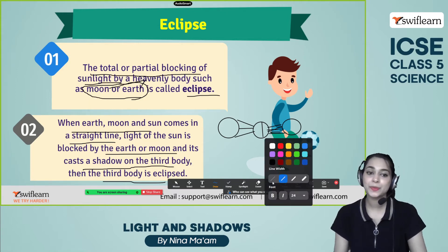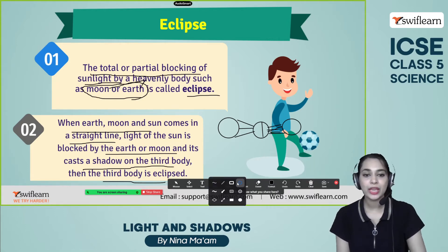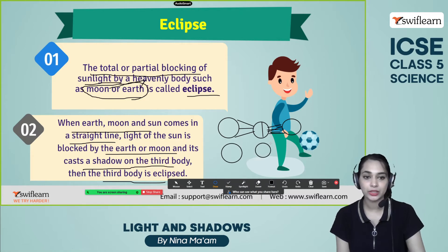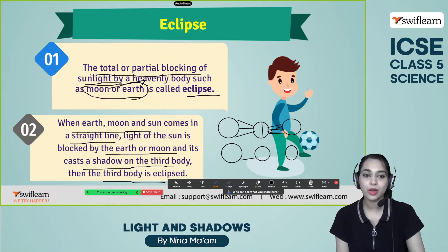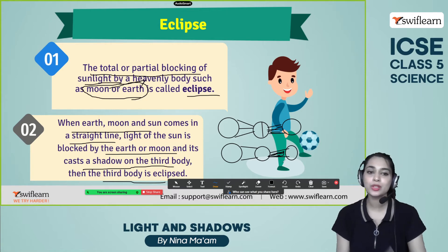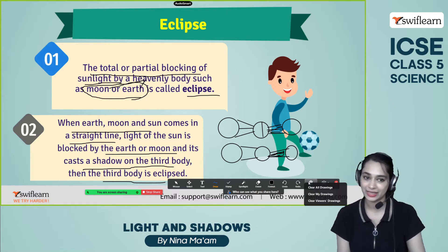That eclipse is one type. In another scenario, this is the sun and here the earth comes between the moon and the sun. When they are aligned, the earth is blocking the sunlight from reaching the moon. The earth is casting its shadow on the moon, and this is also a type of eclipse.